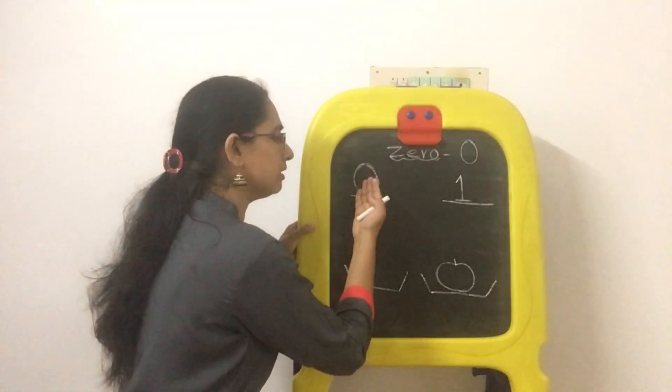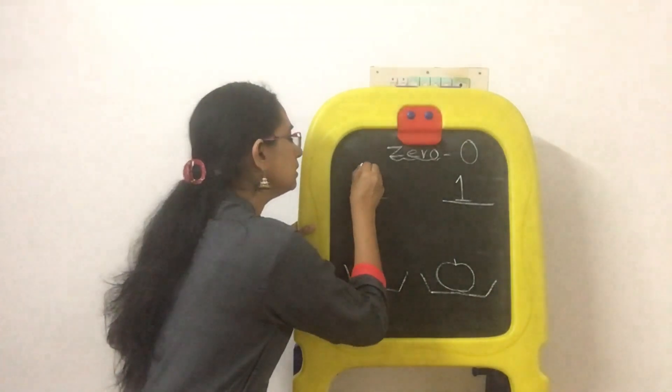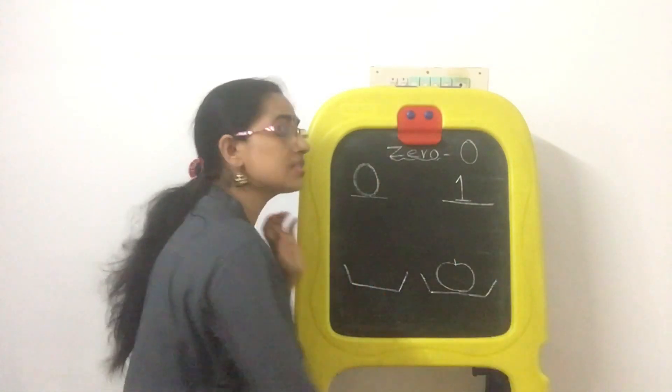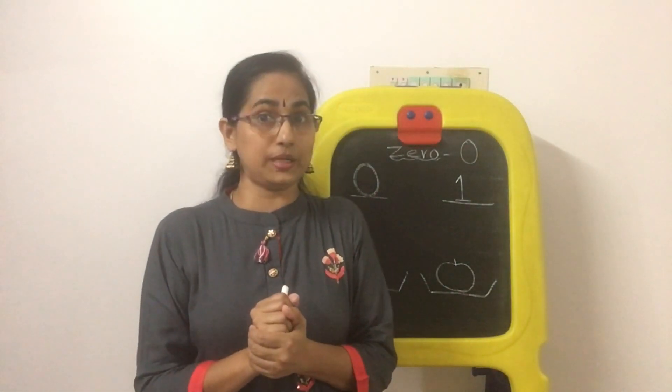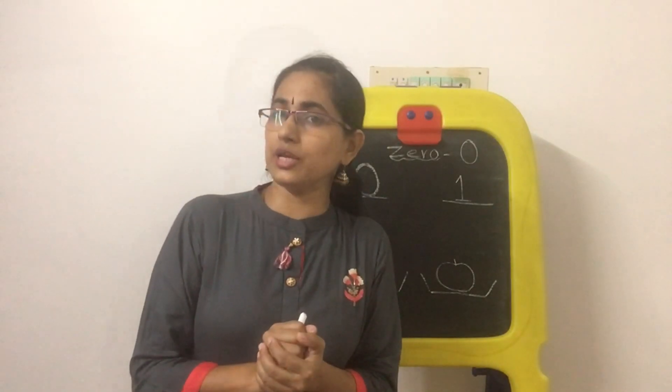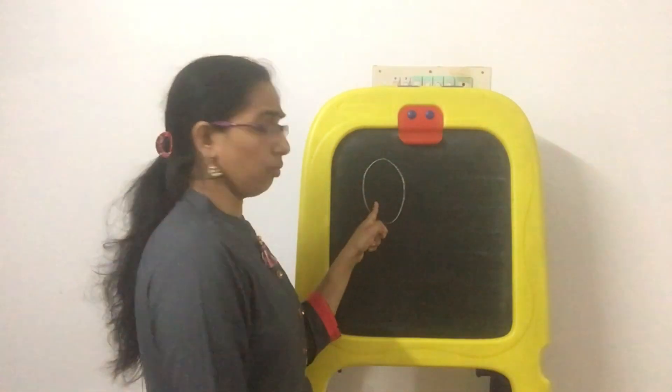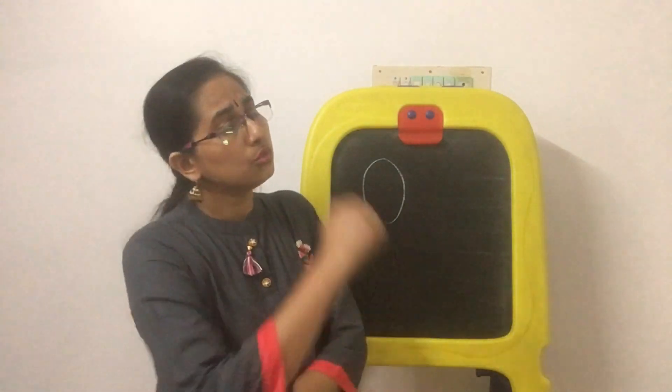Now kids, I'm going to tell you a story. Are you all ready to hear about zero? Once there was a party — a number party — where all the numbers were enjoying, happy, dancing, and singing. But zero was the one sitting outside and weeping.